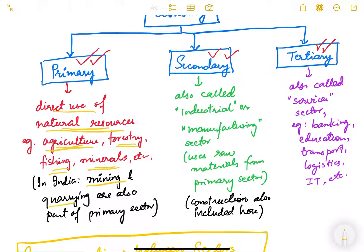In India, mining and quarrying are also part of the primary sector because here too you are basically using natural resources. There is a slight difference between the two activities. Mining is an activity whereby you dig out resources from the deeper parts of the earth — for example, mining of coal, iron ore, or bauxite — where you dig the earth and remove material from inside the earth's crust.